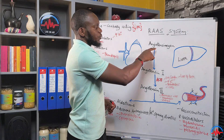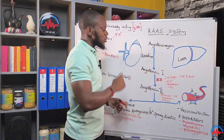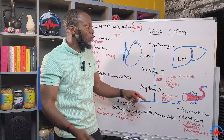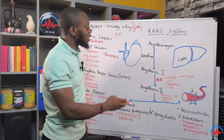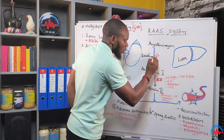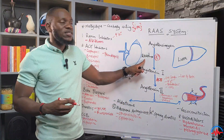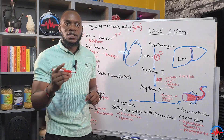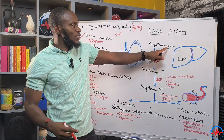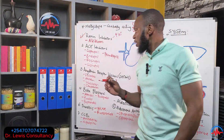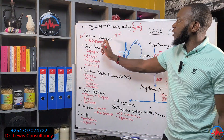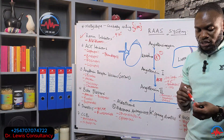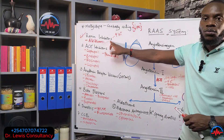To bring blood pressure down, we need drugs that block this process. The first drug class blocks renin — these are called renin inhibitors or renin blockers. They block renin from converting angiotensinogen to angiotensin 1. There is just one drug in that group, and it is called aliskiren.